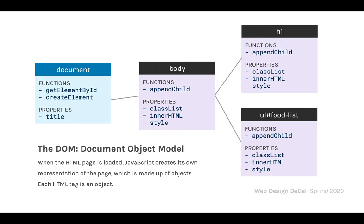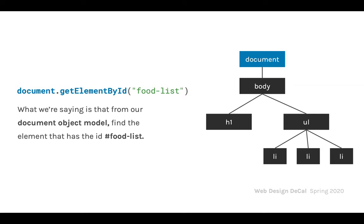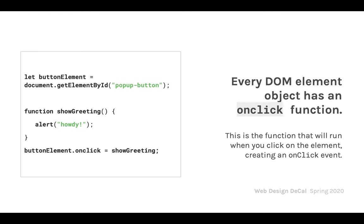Each of these DOM objects has its own properties that you can use, which you've probably already used through previous homeworks. What getElementById does is traverse down the DOM tree until it finds an element with the specified ID, starting at document, going down through body, and so on. Every DOM element also has built-in event functions like onclick, onmouseover, and onkeypress — if you did last week's homework, you know what we're talking about.